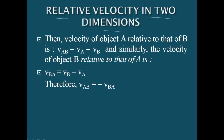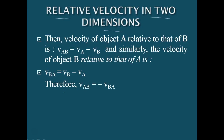The concept of relative velocity, which is introduced in motion along a straight line, can be easily extended to include motion in a plane. Suppose two objects A and B are moving with velocities VA and VB with respect to some common frame of reference. Then the velocity of object A relative to B is given by VAB, that is VA minus VB.